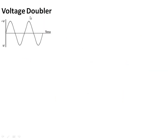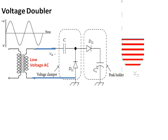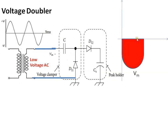Here I am going to discuss about the half wave voltage doubler. This half wave voltage doubler consists of two diodes and two capacitors. The first capacitor and diode is known as a voltage clamper, and the second diode and capacitor is known as a peak holder for the negative peak at the input. So at the negative peak, this terminal will be negative and this terminal will be positive.